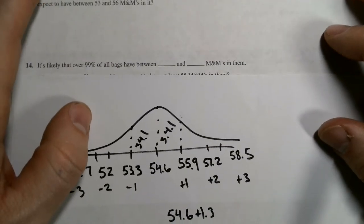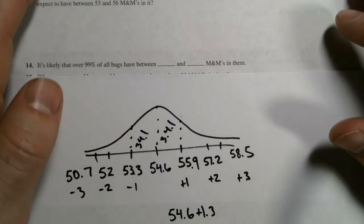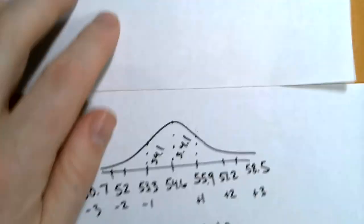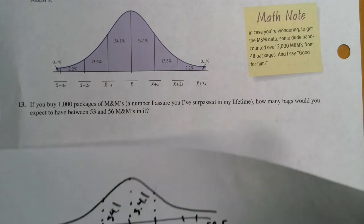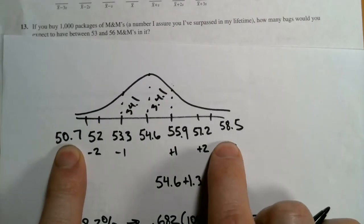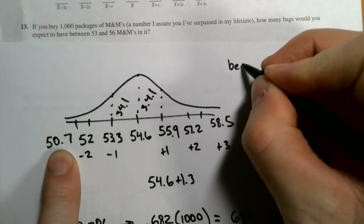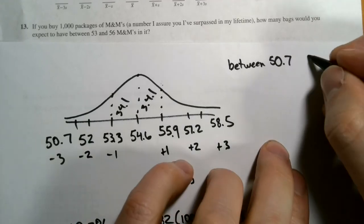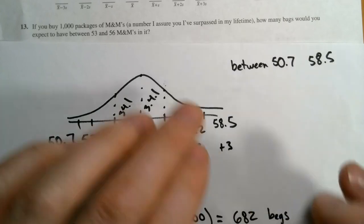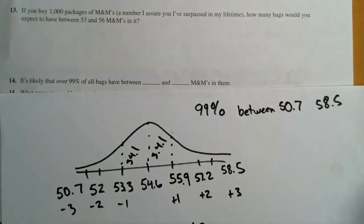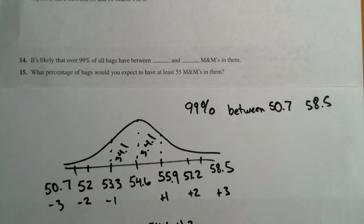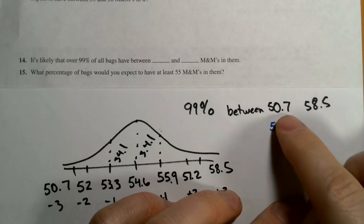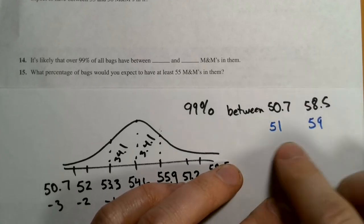Next question says, it's likely that over 99% of the bags have between blank and blank. Well, what we're using here is back on the previous page, the empirical rule said that 99.7% are within three standard deviations of the mean. So for this question, which is question 14, most likely it's between 50.7% and 58.5%. He's just not being very accurate in terms of his language here. He should probably say 99.7% would be between this. I'm guessing what he wants us to write here, because it's difficult to calculate what 0.7 of an M&M is. He's probably wanting us to think between 51 and 59.